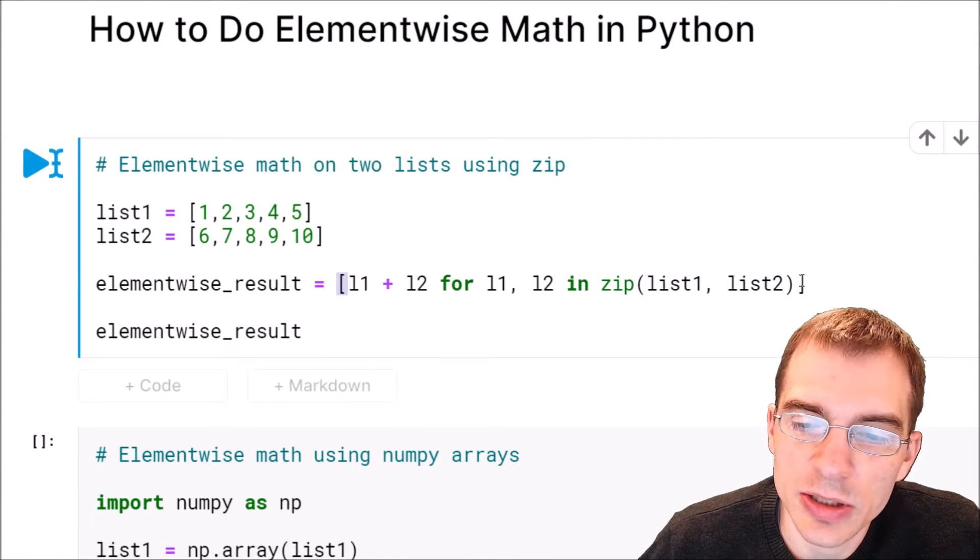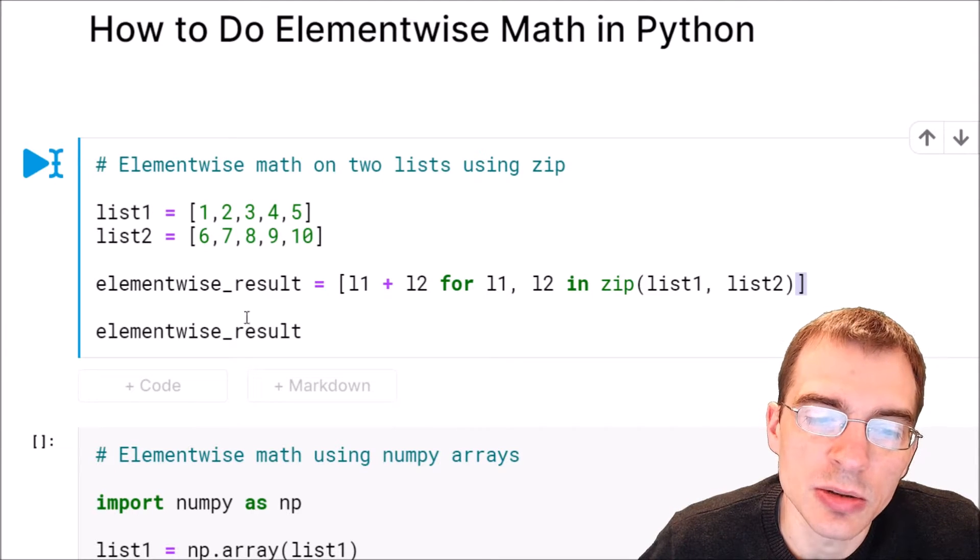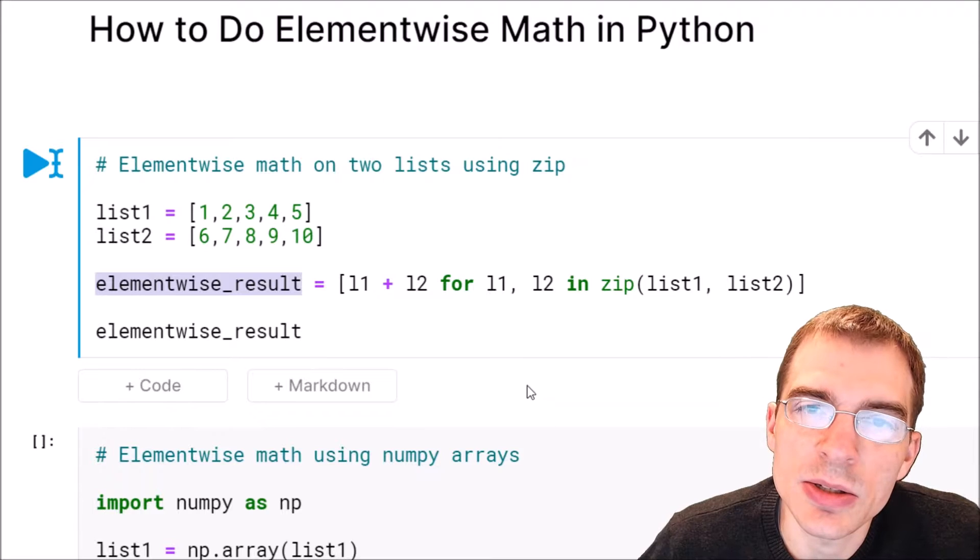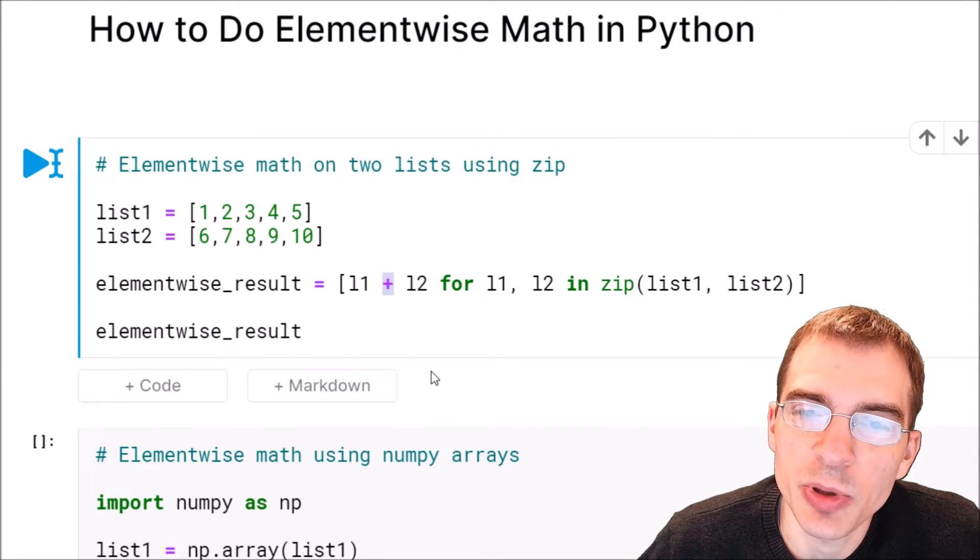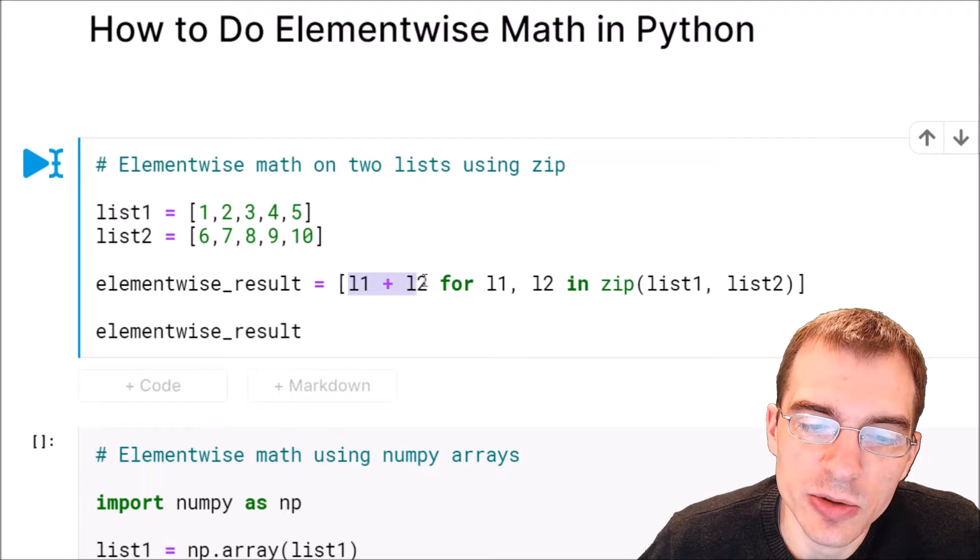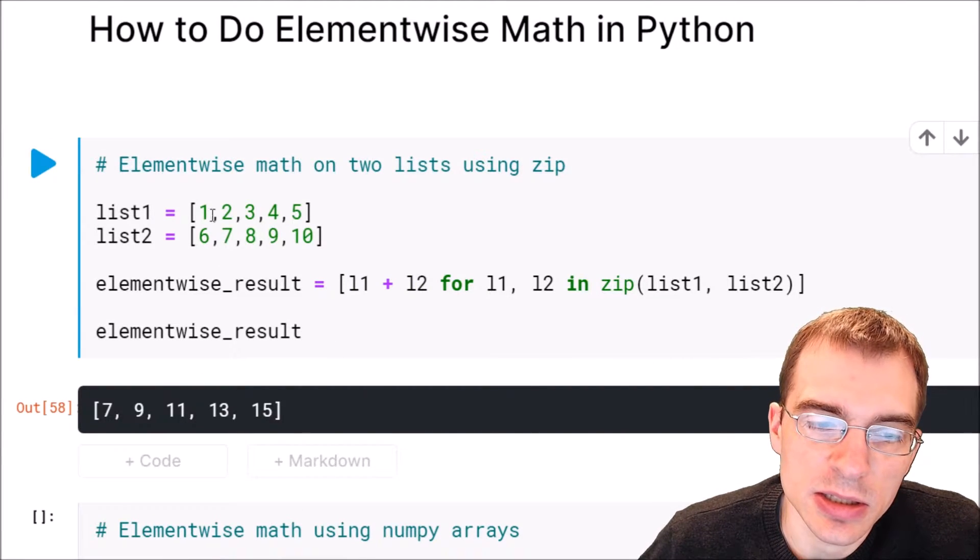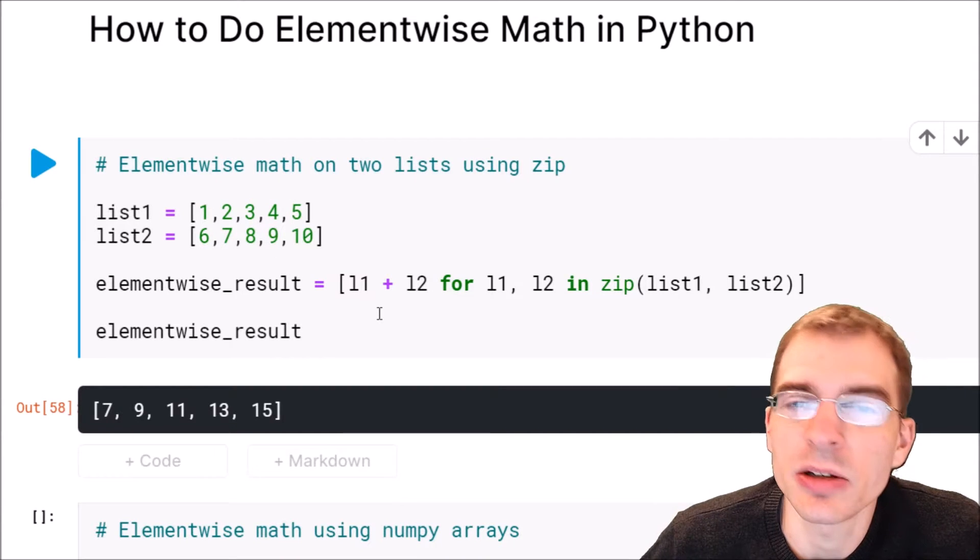We wrap that whole construction in a list comprehension, and then the result will be a final list that is the element-wise operation that we put right here. In this case we put plus, so we're adding the two elements. When we run this, we will see a new list that is the element-wise addition of each of these two lists.